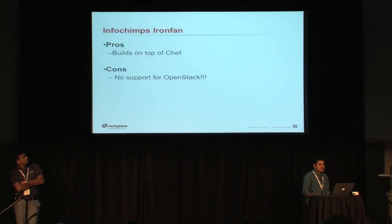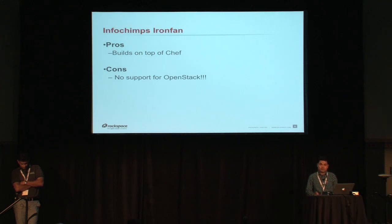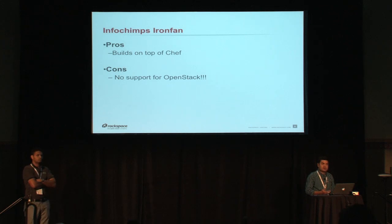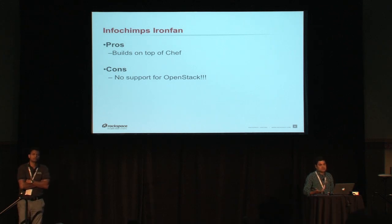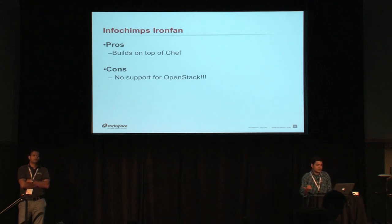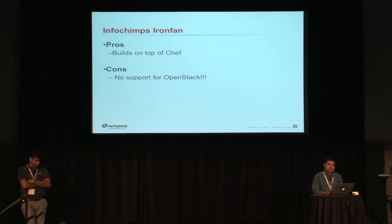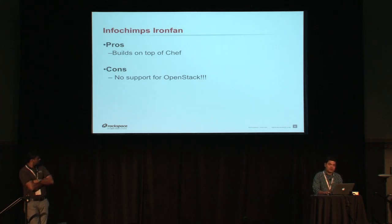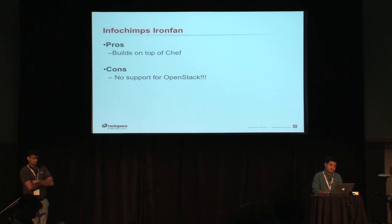Another tool that keeps coming up is Iron Fan by Infochimps — it's also open source software and is very good on the EC2 side. But for OpenStack they don't have support for it, although they do have a press release and blog post saying they support OpenStack — there is nothing in the code. With Amazon it's pretty good, and somebody could probably add a provider for Rackspace or OpenStack cloud, but it's not there yet. It builds on top of Chef and Knife.